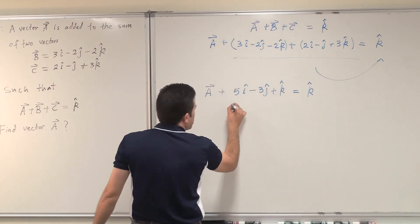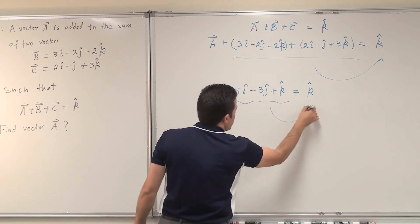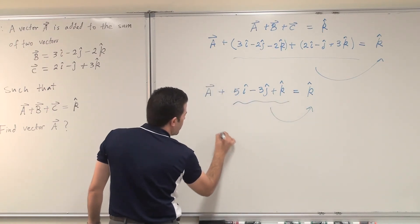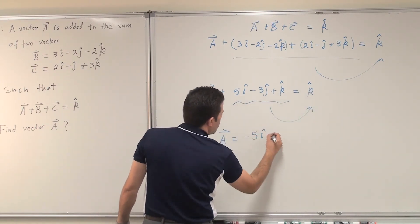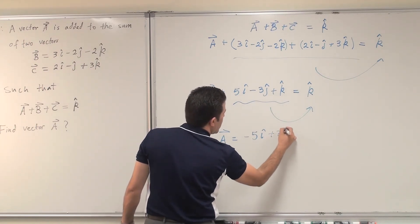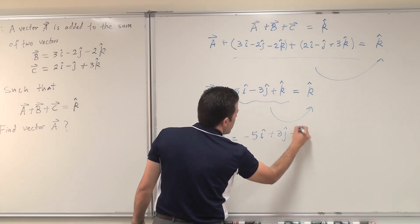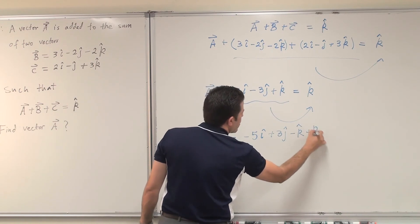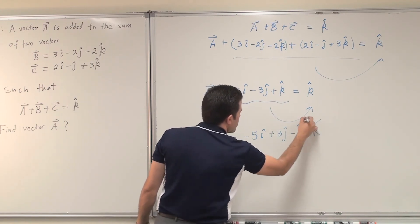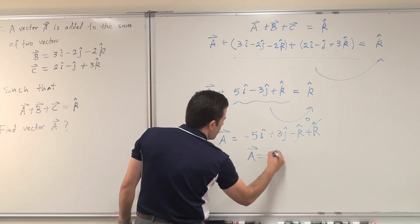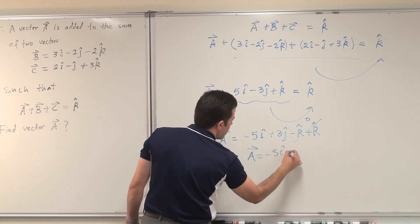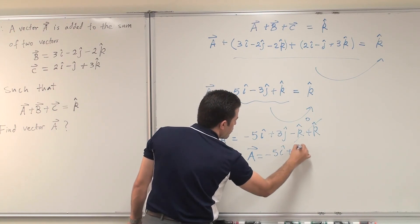Now, as I said, I take all this to the other side, so A will be minus 5i-hat, because I take it to the other side, plus 3j-hat, minus k-hat plus k-hat. This would give zero. So vector A will be minus 5i-hat plus 3j-hat.